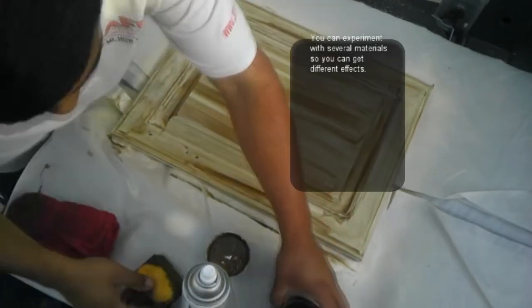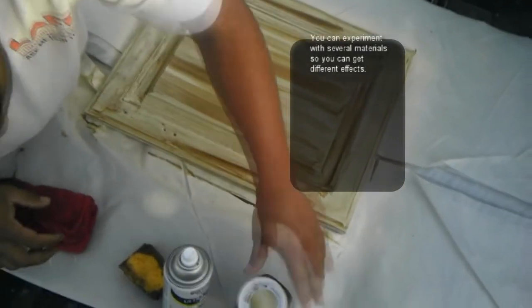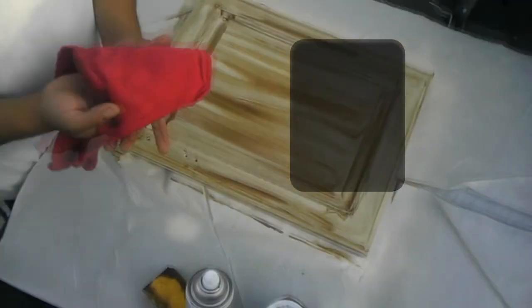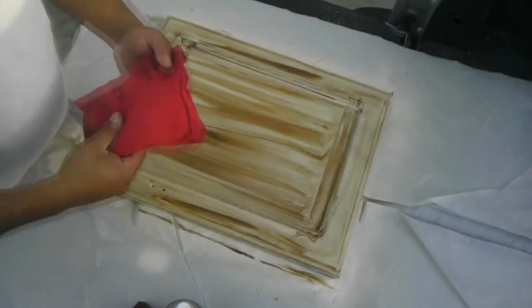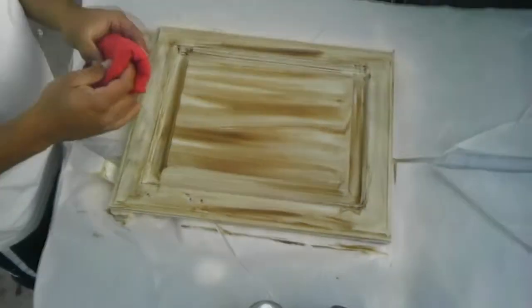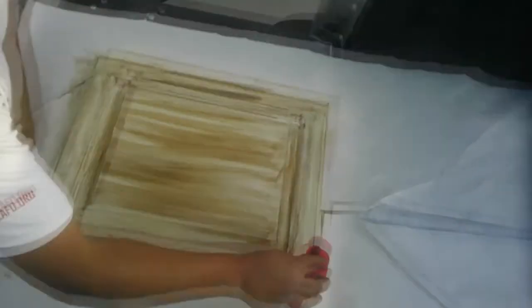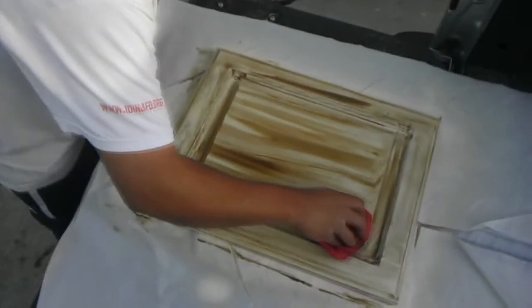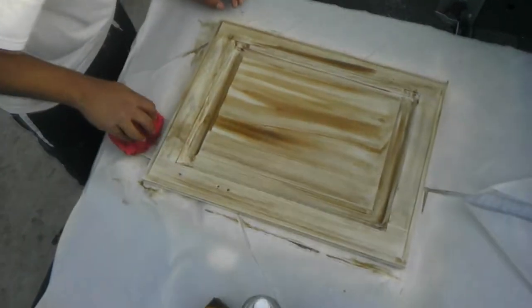What I like to do is I like to let the glaze sit for a few seconds because it dries fairly fast. And then I grab a rag and wipe it with the rag in one direction. Once again that all depends on your design.